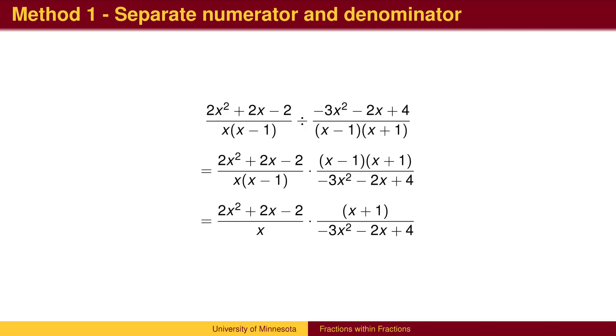Once the numerator and denominator have been combined into a single fraction, this is now a division problem. The numerator is divided by the denominator, so we multiply the numerator by the reciprocal of the denominator, canceling common factors.